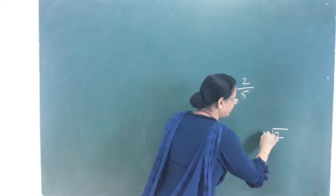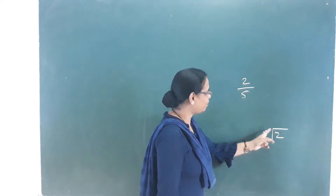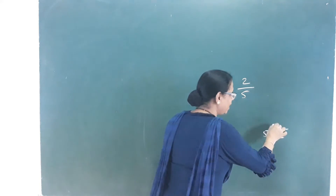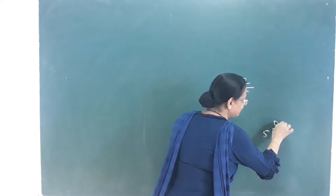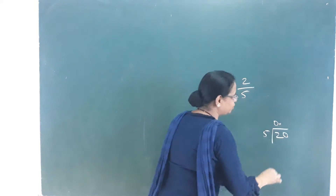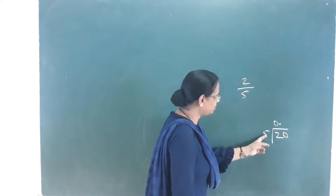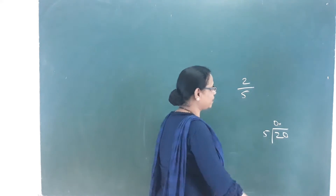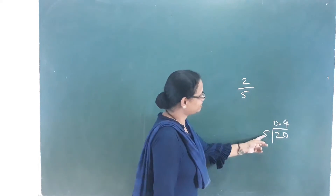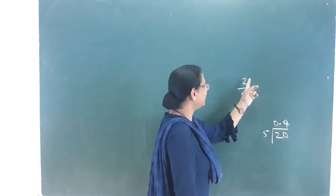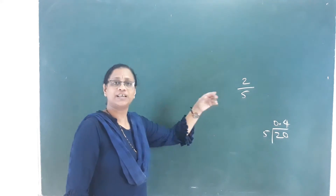We divide by 5. We add a zero, making it 20. 20 divided by 5 gives 4. So the result is 4.